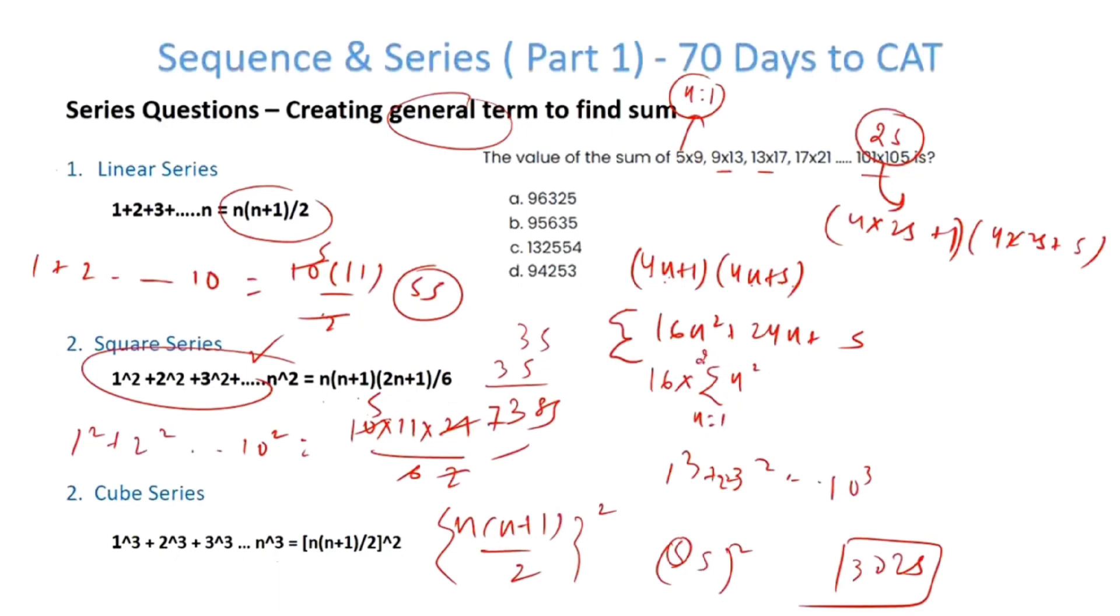16 times the sum of n² from n=1 to 25, similarly 24 times sum of n from n=1 to 25, and 5 times sum of 1 from n=1 to 25. This is summation of n², this is summation of n.